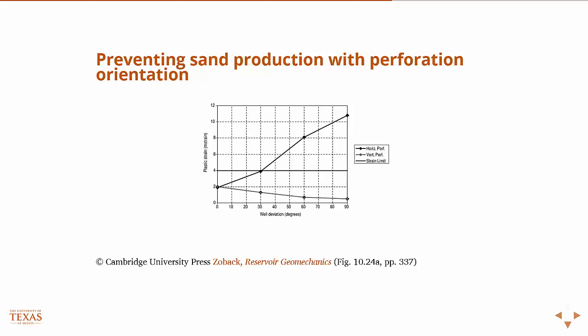One way to prevent sand production is through controlling the drawdown. Another way you might be able to prevent sand production is through oriented perforation.